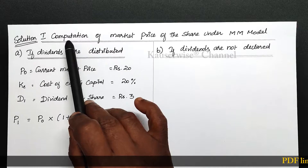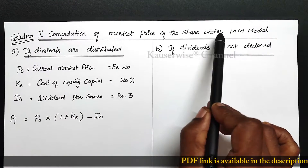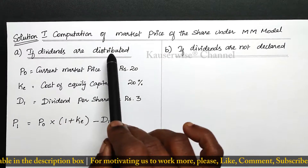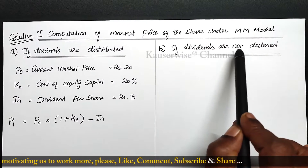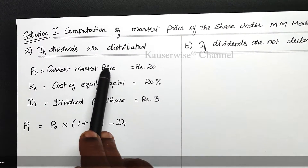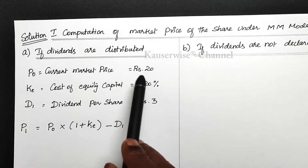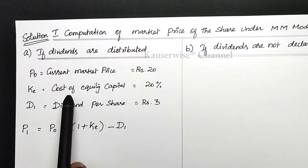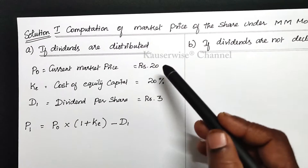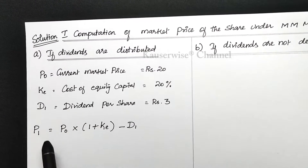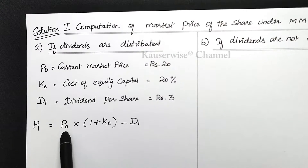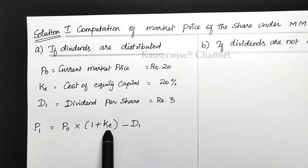Computation of market price of the share under the MM approach. We are going to find out market price per share if dividends are distributed and if dividends are not declared. P0 is rupees 20, KE is 20 percent, and D1 is rupees 3. The formula is P1 = P0 into 1 plus KE minus D1. Substituting: 20 into 1 plus 0.20 minus 3.